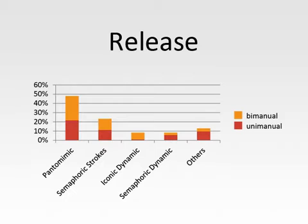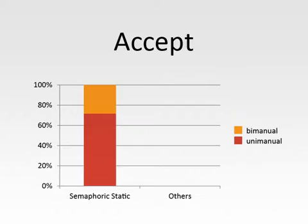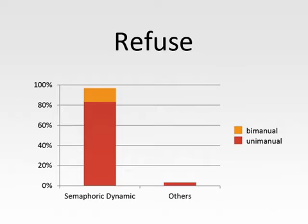Releasing is performed by pantomimic acting and semaphoric strokes. Accepting is only performed by semaphoric static gestures. While refusing is mostly done using semaphoric dynamic gestures.